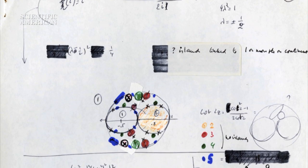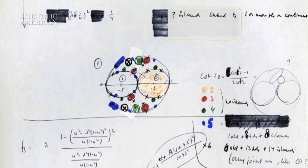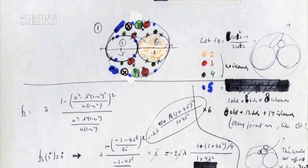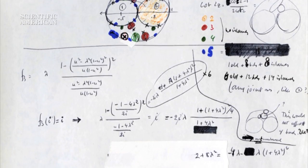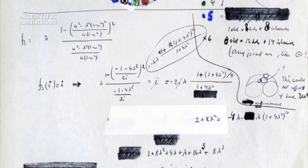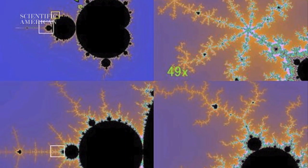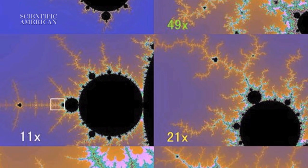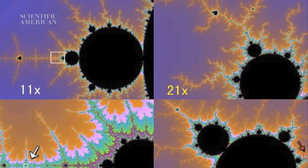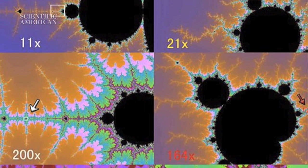While Mandelbrot thought in rich visuals, this is one of the very few drawings in his hand, detailing his quest to determine if the islands were actually connected to the larger set. Ultimately, mathematicians Adrian Douady and John Hubbard would prove that the term island was a misnomer, and the dots were in fact part of the whole.